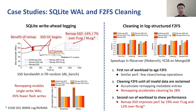In SQLite write-ahead logging, remap operations are used for checkpointing, applying database changes from the log to home locations. In the left figures, we can see the usage of remapping improves SSD bandwidth by more than 20% and reduces flash writes by 45% in a random write workload. Compared with the flash-log and NVRAM-log schemes, RemapSSD has 14% and 7% higher bandwidth after GC has been triggered. In F2FS, remap operations are used for relocating valid data in cleaning operations. In the right figures, we can see the usage of remapping accelerates cleaning by 28%. Compared with the flash-log and NVRAM-log schemes, RemapSSD achieves 19% and 12% higher performance.